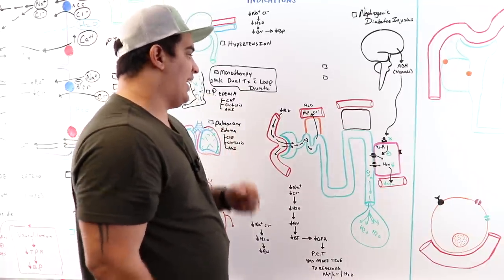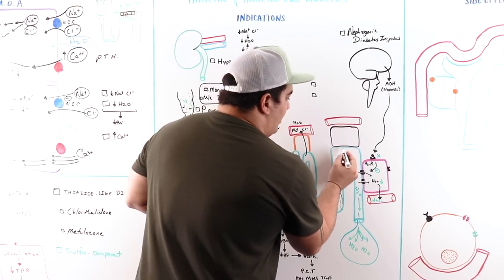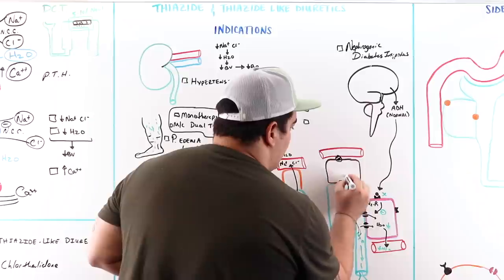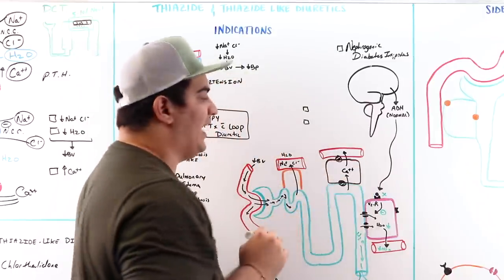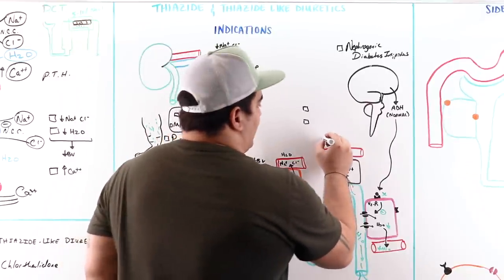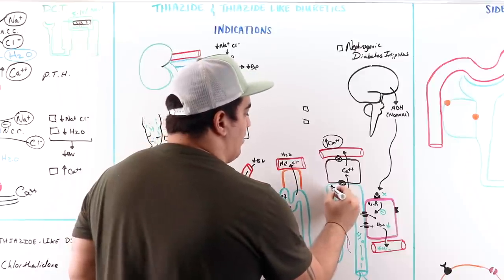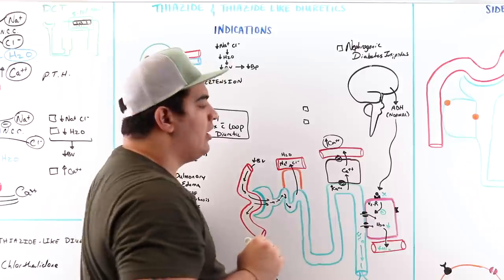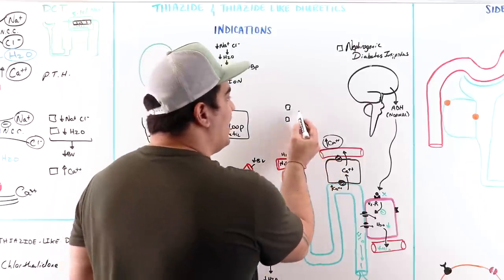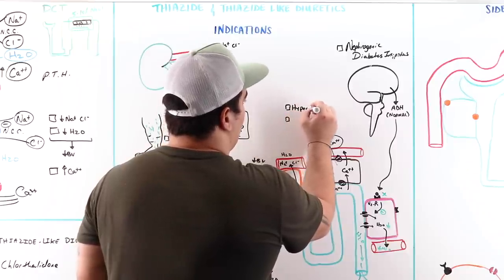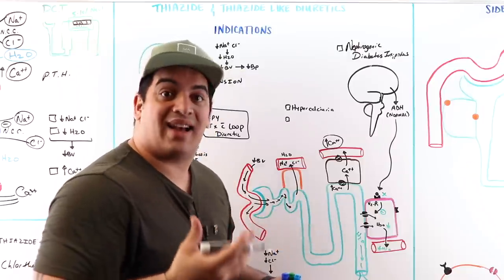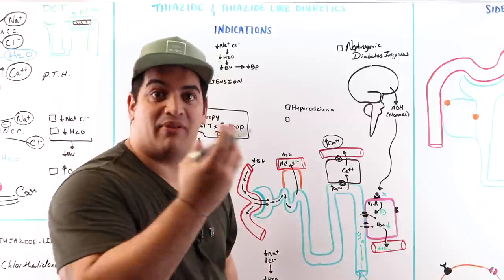Thiazides also increase calcium transport into the blood from the distal convoluted tubule. This is relevant for patients who have high amounts of calcium in their urine (hypercalciuria), which predisposes them to renal stones — especially calcium oxalate or calcium phosphate stones if phosphates and oxalates are also present. Thiazides pull excess calcium out of the kidney tubules, helping prevent stone formation.